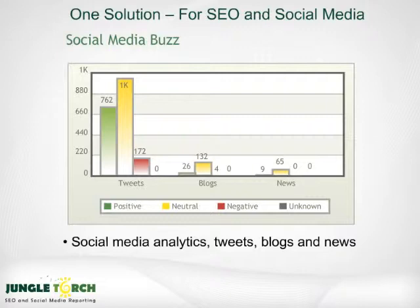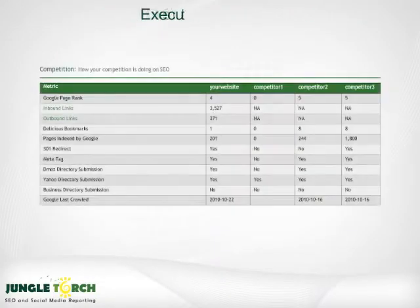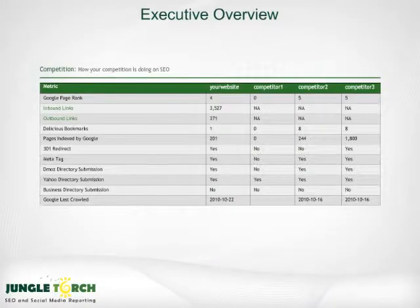This allows you to quickly see user sentiment that's positive, negative, or neutral. Jungle Torch's executive overview provides you with a high-level SEO summary of your site.